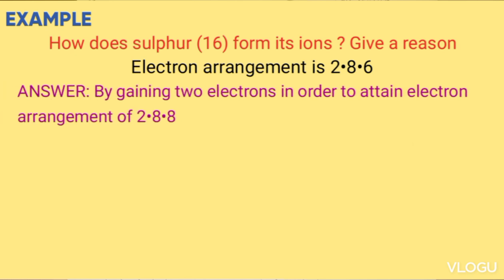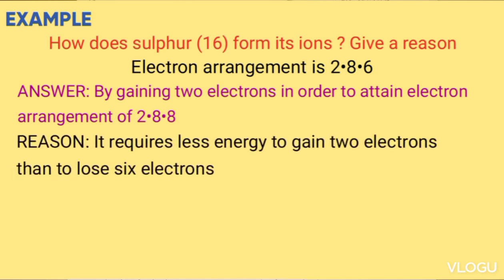So the easiest way is by gaining 2 electrons. Reason: it requires less energy to gain 2 electrons than to lose 6 electrons.